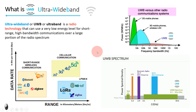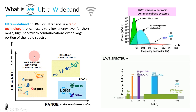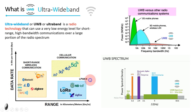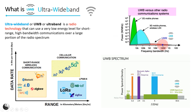Now let's understand ultra-wideband using these images. In this graph, radio technologies are differentiated using range and data rate. Bluetooth, Wi-Fi, ZigBee, ultra-wideband, and NFC all come in short-range. 2G, 3G, 4G, 5G come in long-range cellular communication, and LoRa, SigFox, and narrowband IoT come in the LPWAN — low-power wide-area network — category. UWB technology is very low-energy but can send high amounts of data over short distances. In the power versus bandwidth graph, you can see ultra-wideband has low power but much wider bandwidth compared to other radio communication systems like 2G, 3G mobile phones and Wi-Fi.